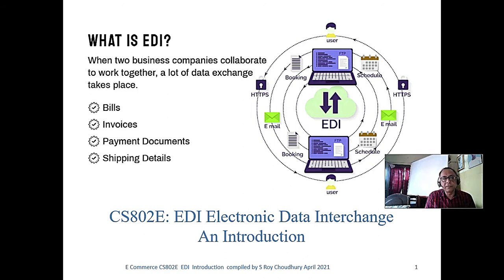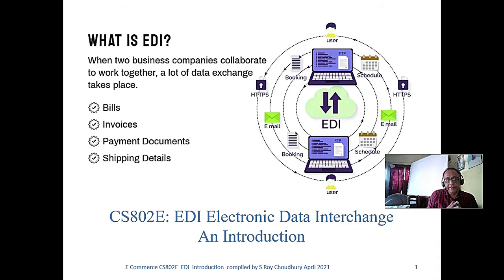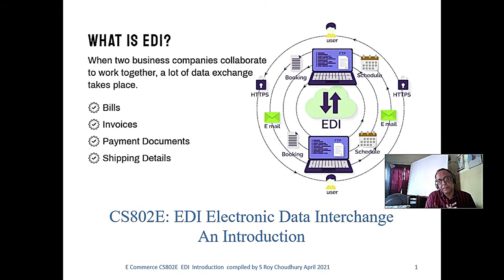They generated the order and gave it over a packet network service. At that time, remember, the internet was not there. The internet was mainly developed in 1996, 97, 98. At that time internet was not there, but the packet service — packet switch network was there, the X.25 network.